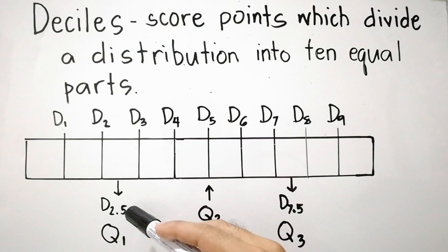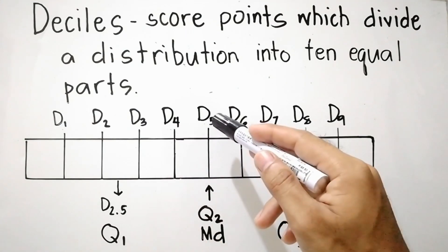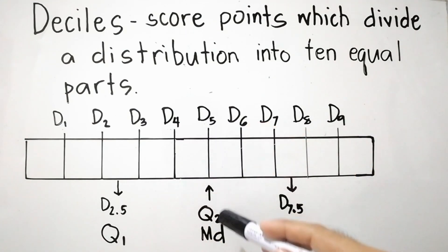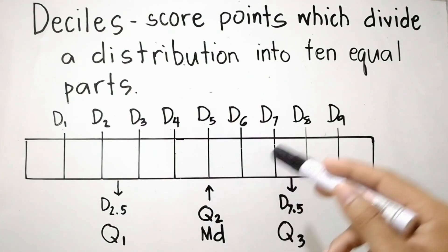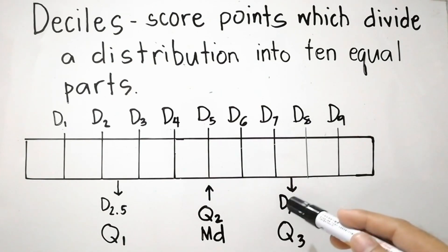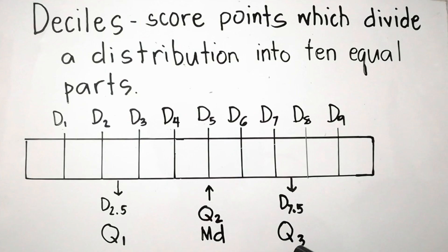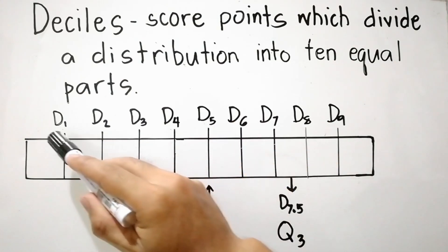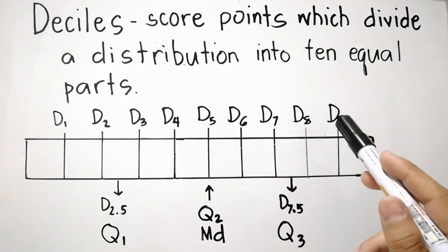D sub 2.5 is equal to Q sub 1. D sub 5 is also the median, or Q sub 2 (the second quartile). Between D sub 7 and D sub 8, that is D sub 7.5, which is equal to Q sub 3 (the third quartile).